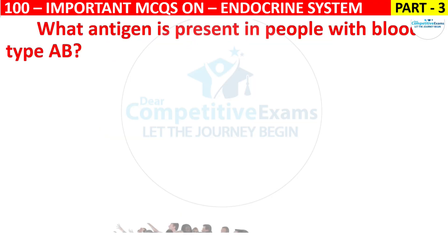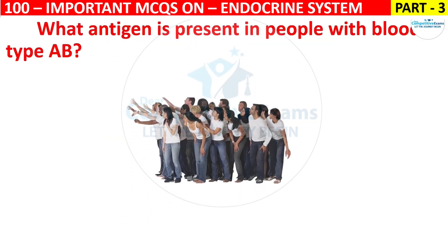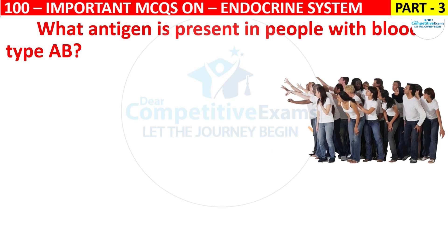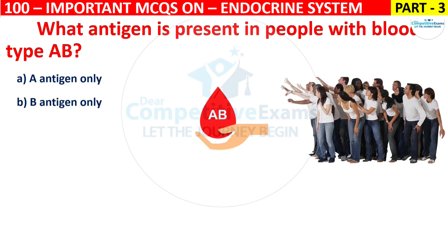Question 26: What antigen is present in people with blood type AB? Your options are A antigen only, B antigen only, Both A and B antigens, or No antigen.